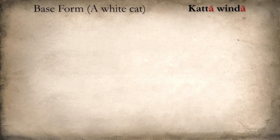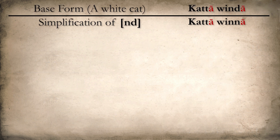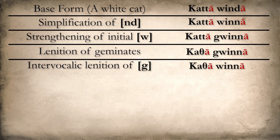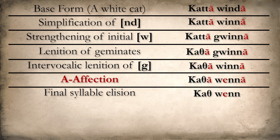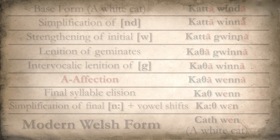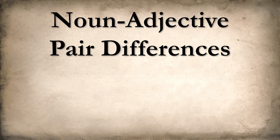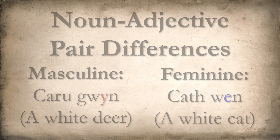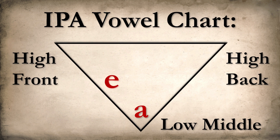However, for the feminine noun-adjective pair, you get 'Cata winda', a white cat, which evolves through 'Cata winda', 'Cata guinnna', and eventually 'Coth wen', and when transliterated to modern Welsh spelling conventions, we get 'Coth wen'. So without minding the initial lenition, we immediately see a difference in masculine and feminine adjectives based on a vocalic difference: 'karu guin' — masculine — versus 'koth wen' — feminine. That distinction was due to the pulling-down effect of the final A, the marker of feminine nouns.